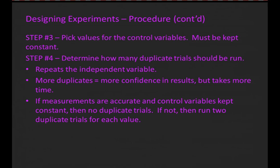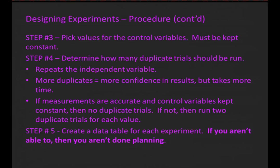However, sometimes we'll have experiments where we can't accurately measure the variables, or we have trouble keeping the control variables constant. Then we'll need to run two duplicate trials for each value, meaning a total of three trials for each value—the original trial plus two duplicates. Step five: create a data table for each experiment. If you aren't able to create a data table, then you aren't done planning the experiment—you don't have enough things figured out yet.